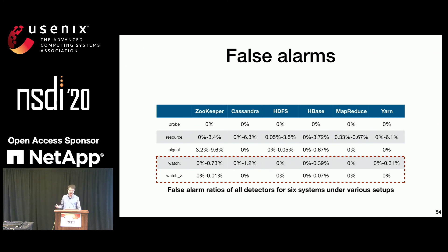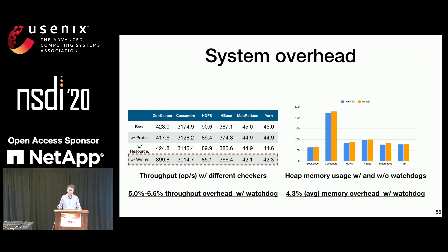We further evaluated false alarms of the watchdogs and baseline detectors on various setups. Watchdogs did not report false alarms in the stable setup, but during a loaded scenario they incur around 1% false alarms due to socket connection errors or resource contention. The false alarm ratio can be reduced by the validator mechanism. On system throughput, the watchdog imposes 5 to 6.6% overhead, and the main overhead comes from the hooks rather than the concurrent checker execution. For memory usage, the watchdog did not incur significant memory overhead because we only lazily replicate objects upon checking.